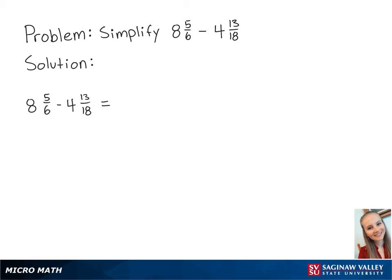For this problem, we're going to simplify 8 and 5 sixths minus 4 and 13 eighteenths.